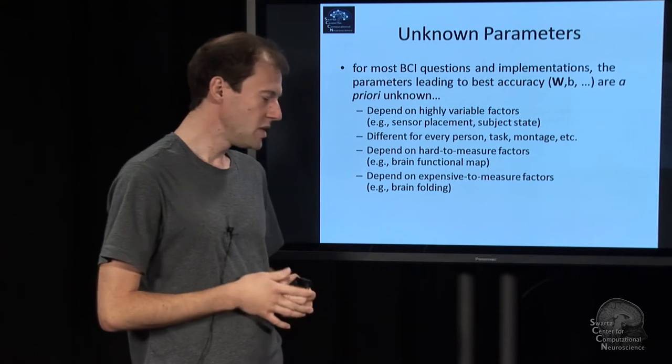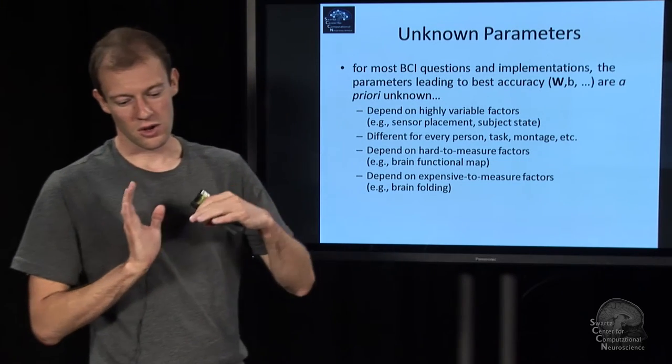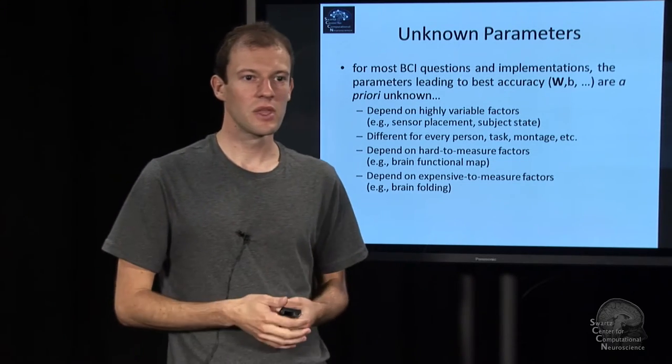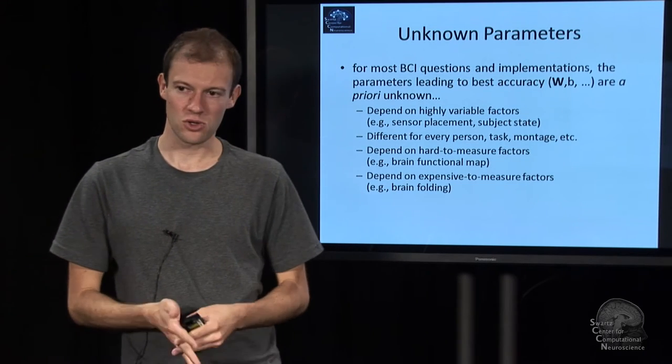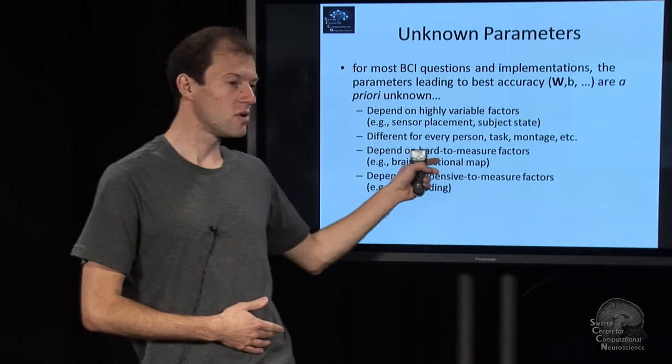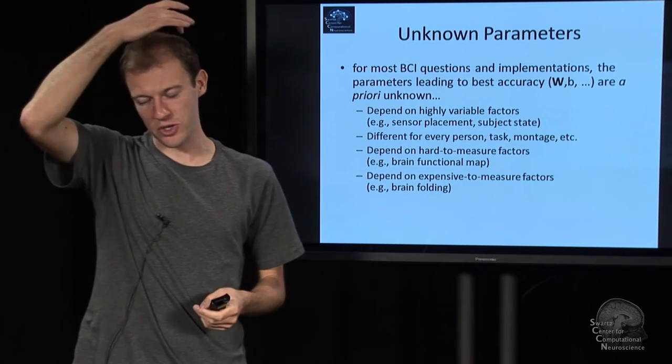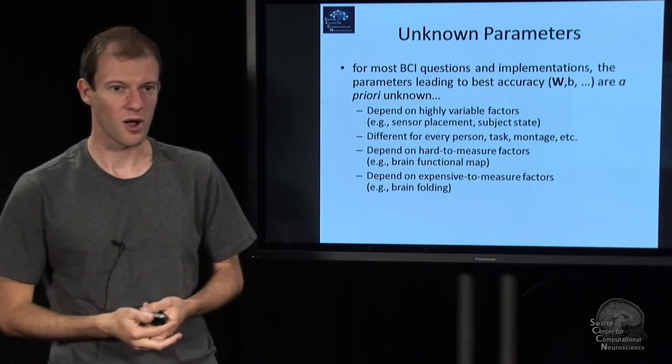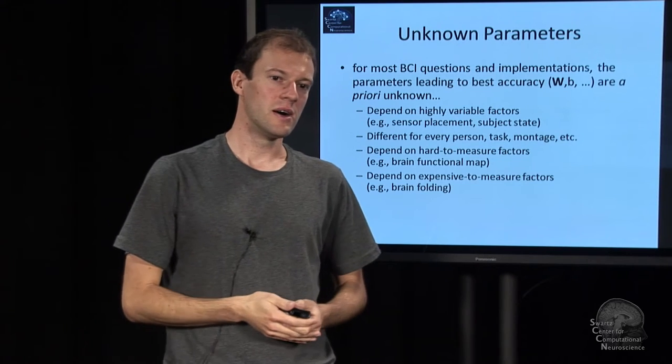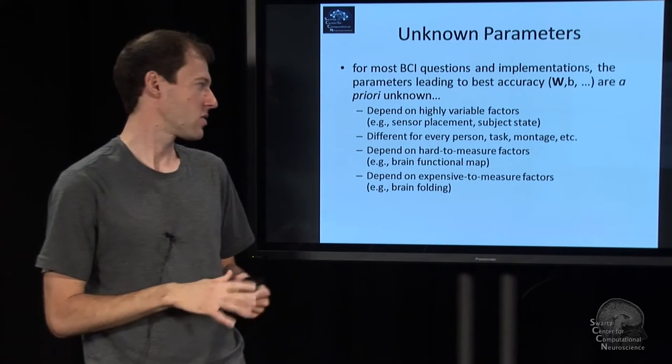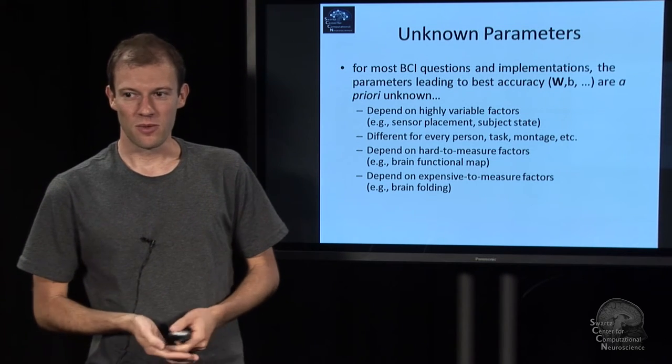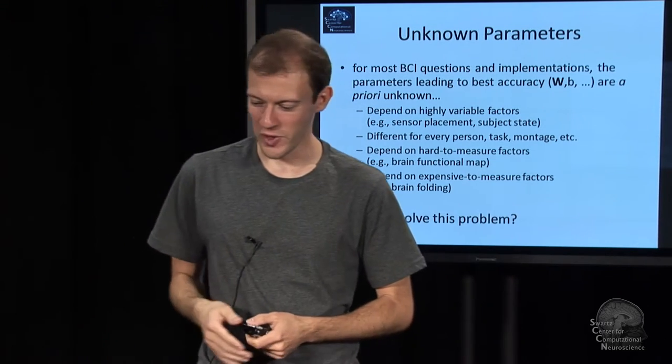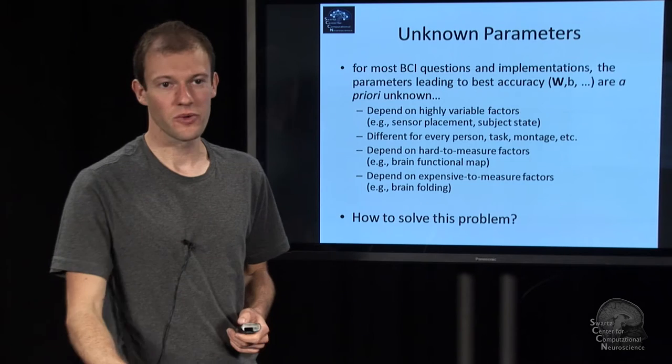They tend to be different across people, across tasks. In some cases, they depend on things that are not easy to measure directly, such as the functional mapping in the brain, where is function expressed, which requires fMRI and so on. And in some cases, they are just expensive. So that's a problem, and we need to figure out a way to deal with that.